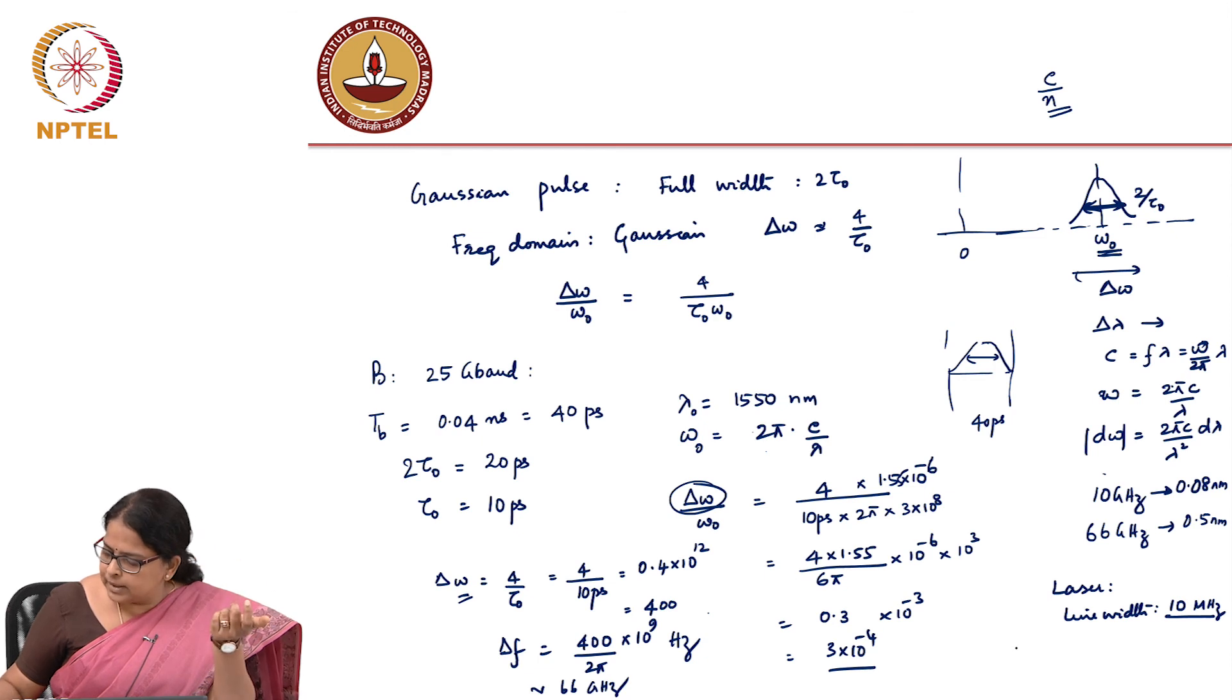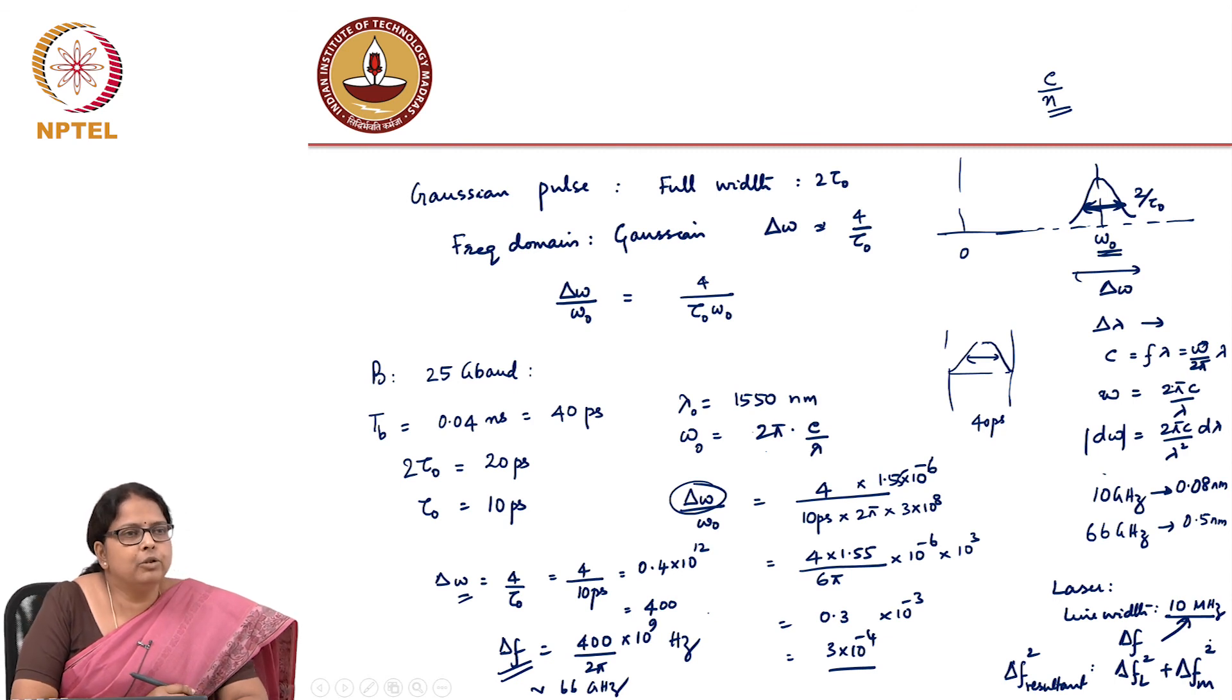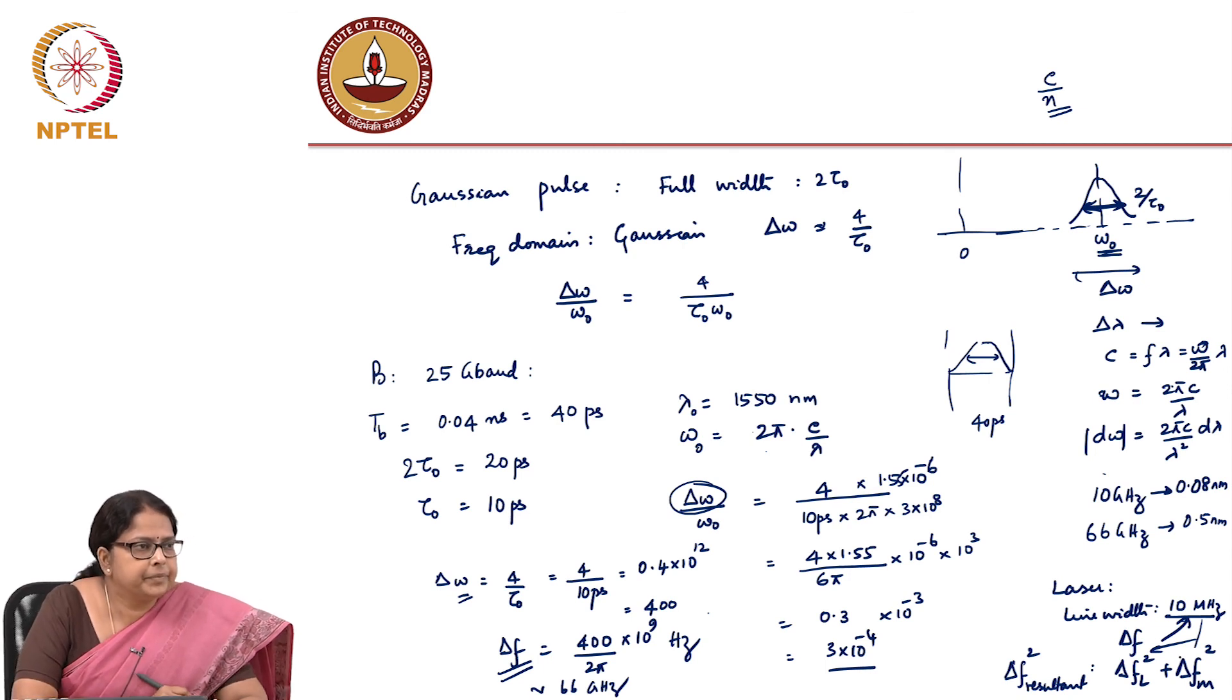In fact, what you should do is, if you have a spread because of modulation, there is a delta f. There is a delta f because of the laser. What you should do is, the resulting delta f resultant, you should calculate that as delta f laser square plus delta f modulation square. This is how you would find the net. But sometimes what happens is for a laser, this 10 megahertz is going to be very small when compared to your modulation spread. So, whether you add this 10 megahertz to it in a gigahertz number, it may not matter. So, you would just look at the modulation spread, the spectral spread.